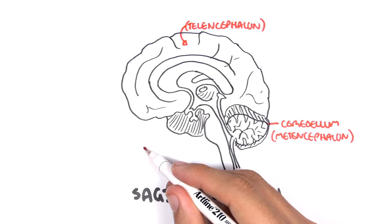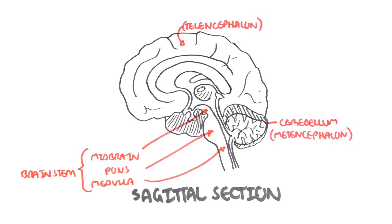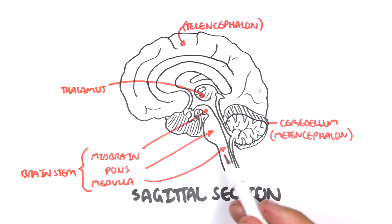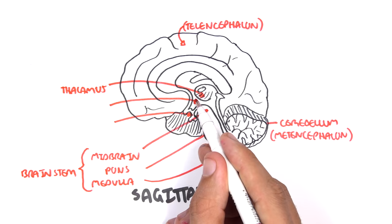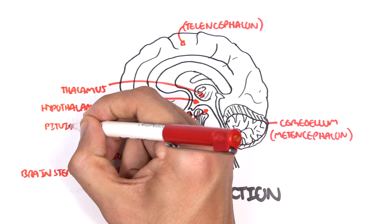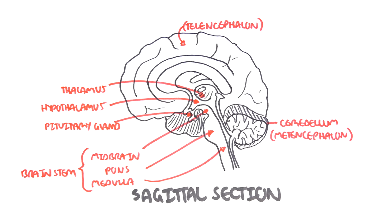Within the center of the cut brain there is the thalamus — the relay station of the brain. Below the thalamus is the hypothalamus; 'hypo' meaning below. Below the hypothalamus are two lobes known as the pituitary lobes. The hypothalamus and the pituitary lobes or glands are important endocrine glands.